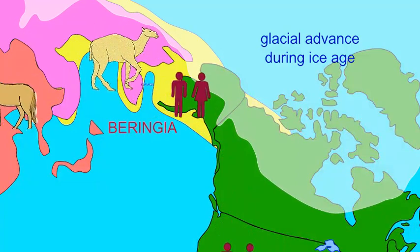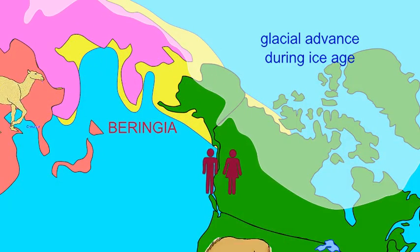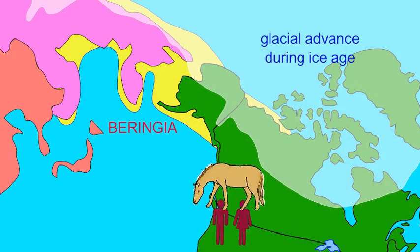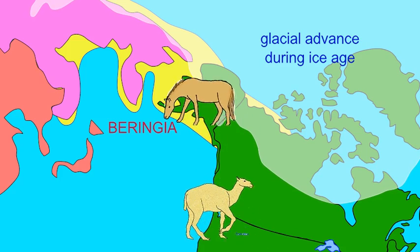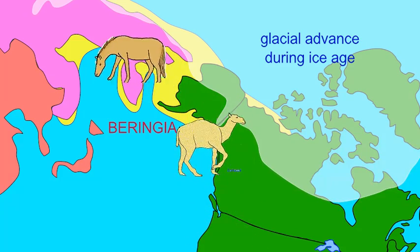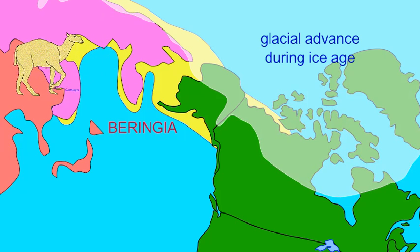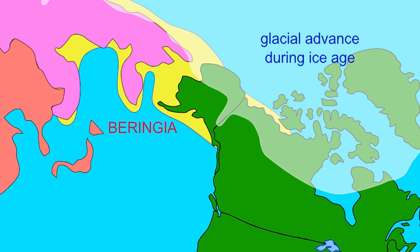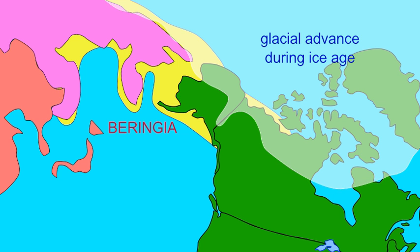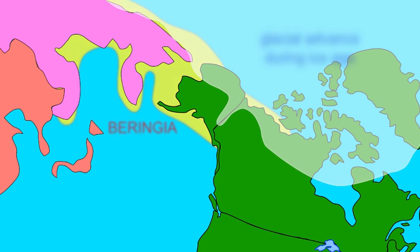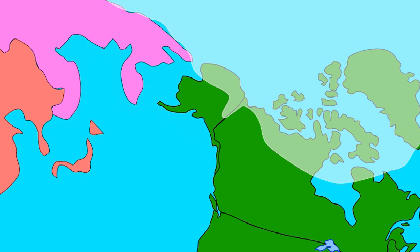Beringia existed during several points during the last two million years because of alternating glacial and interglacial periods. Beringia existed as a land bridge between around 22,000 years ago and 12,000 years ago.